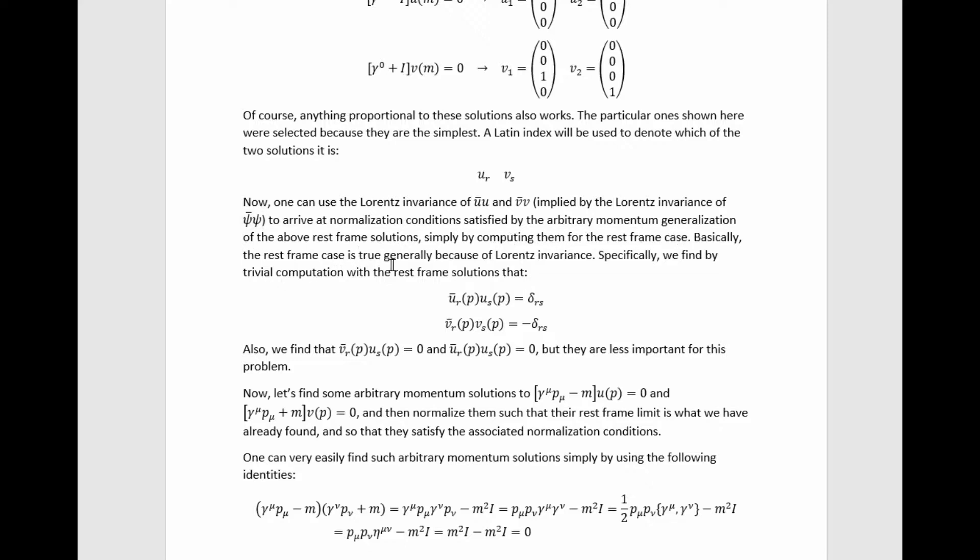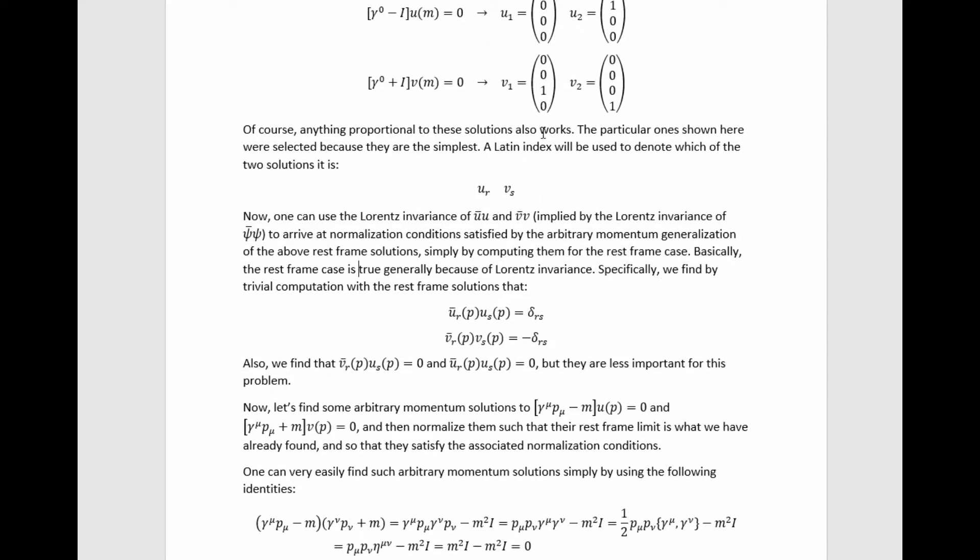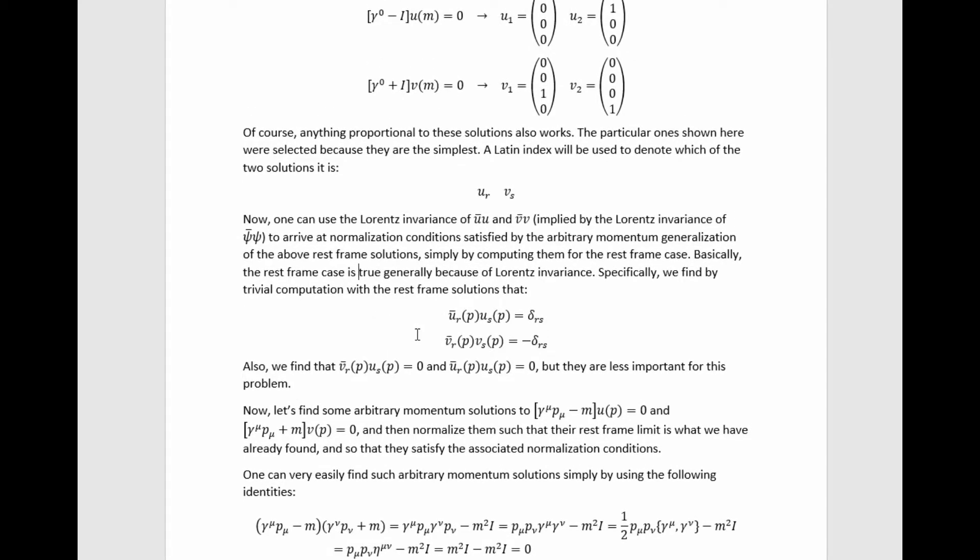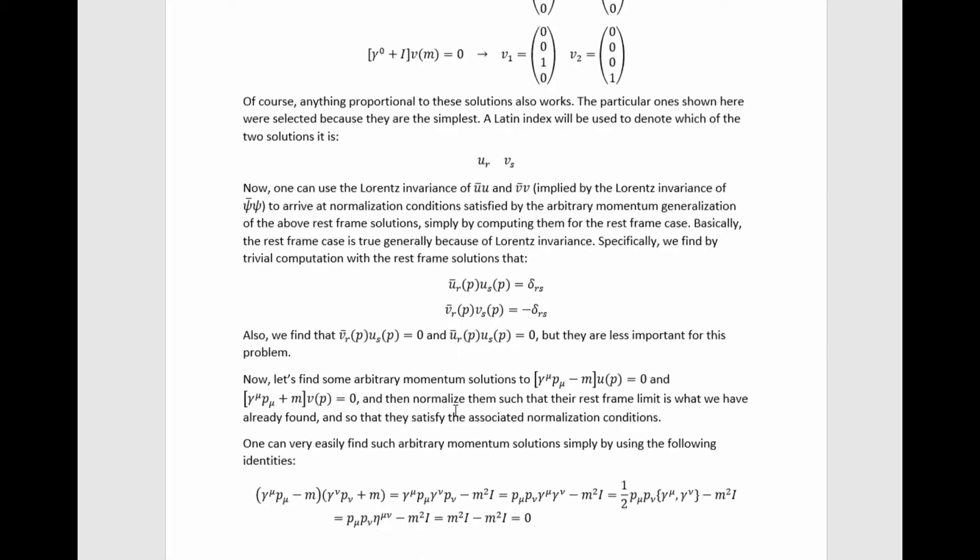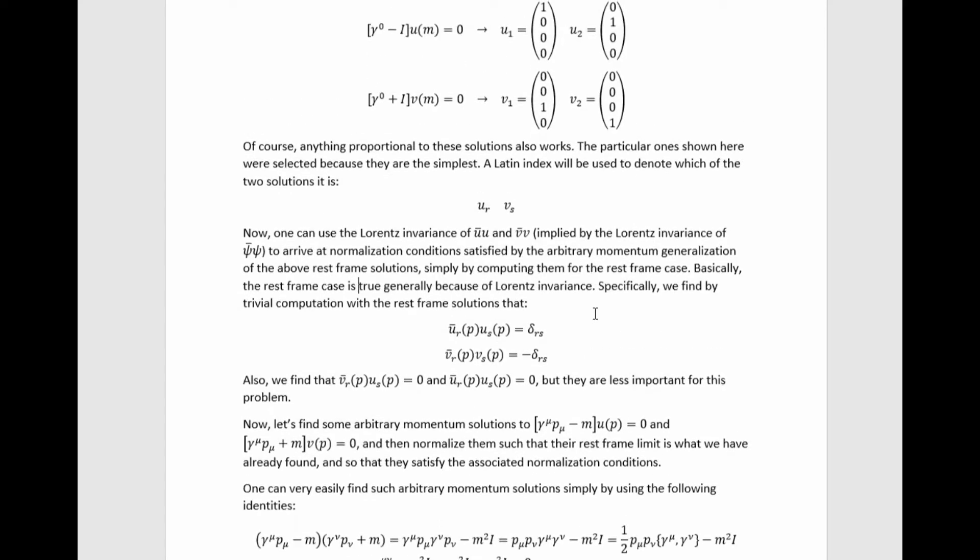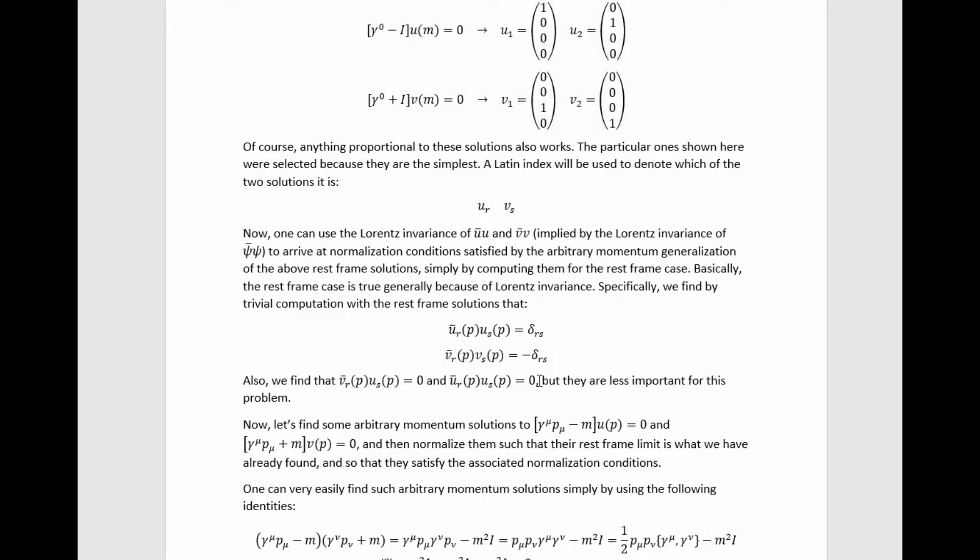Basically, the rest frame case is true generally because of Lorentz invariance. Specifically, we find by trivially inserting these values into these relations that this is true, and because of the Lorentz invariance of these quantities, it's true for arbitrary momentum if we are using the momentum-dependent generalization of specifically this selection of solutions here, which we made again not because they're the only ones, but just because they're the most simple. So then we want momentum-dependent solutions that in the rest frame simplify down to this, and therefore satisfy these normalization conditions.